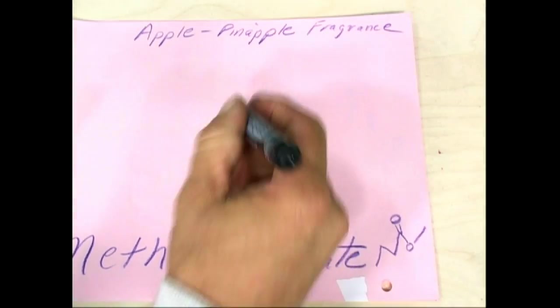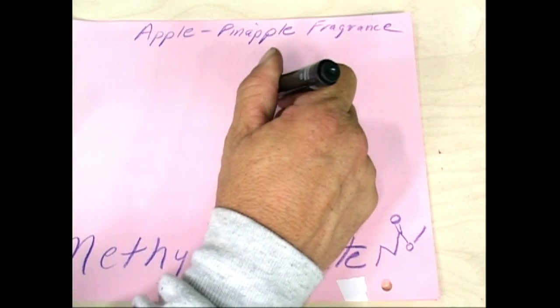So we've got one, two, three, four carbons to where the oxygen is. Let's go over this way here.